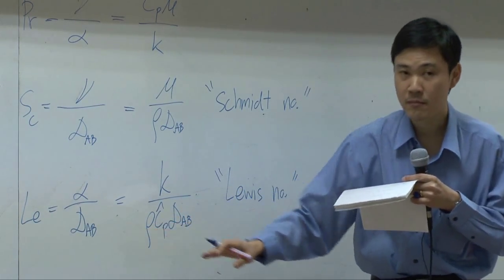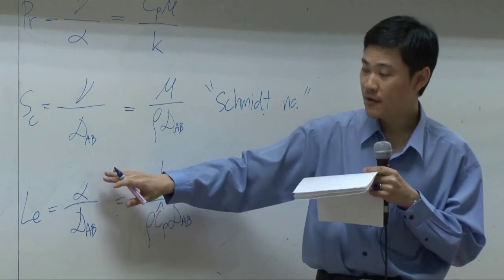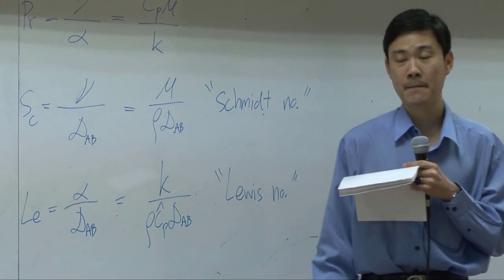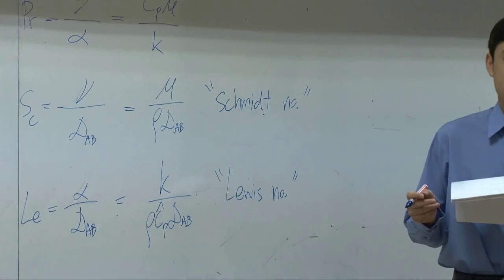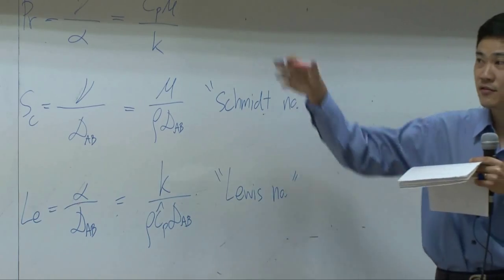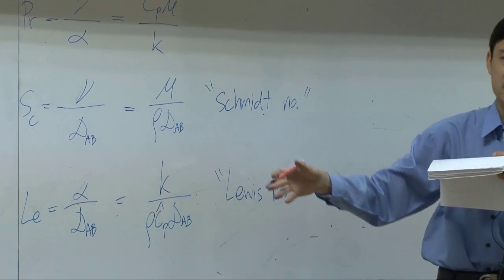And Lewis number would appear whenever you have energy transport together with mass transport. Of course, if you have everything all together, momentum, mass, energy, you can have all three all together.